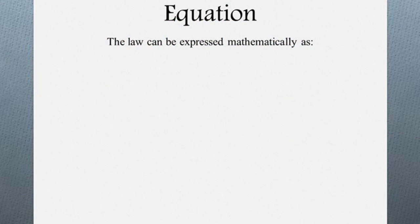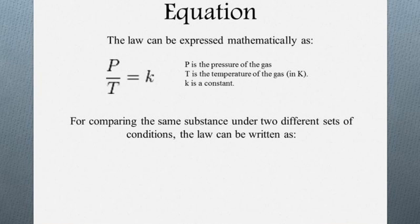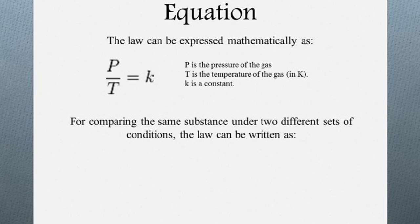The equation of this law can be expressed mathematically as P over T equals k, where P is the pressure of the gas, T is the temperature of the gas in K, and k is a constant.